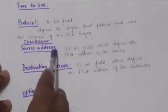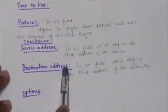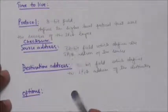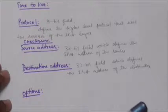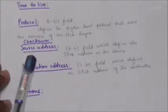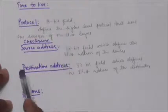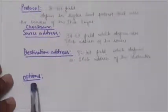The Checksum field will be studied in another tutorial. The Source Address field is a 32-bit field that defines the IPv4 address of the source. The Destination Address field is also a 32-bit field that defines the IPv4 address of the destination. Both the source and destination address fields must remain unchanged while the IPv4 datagram travels from the source host to the destination host.